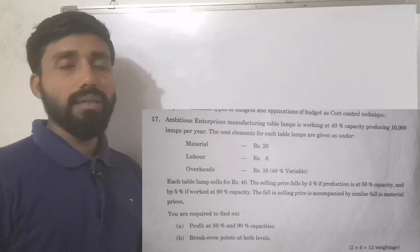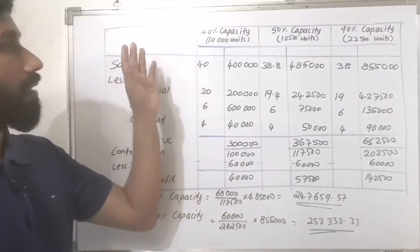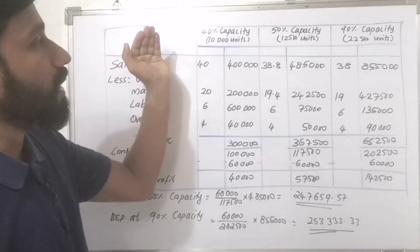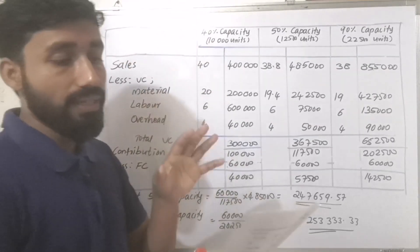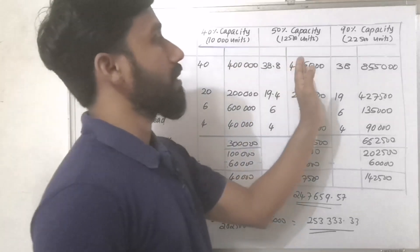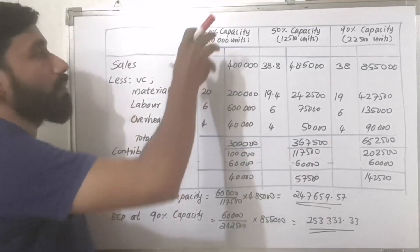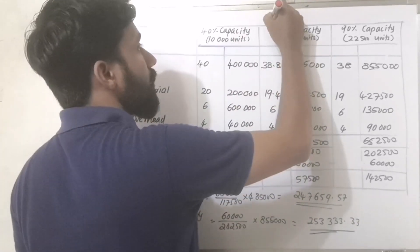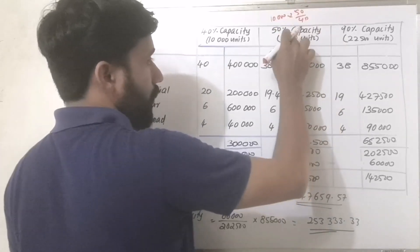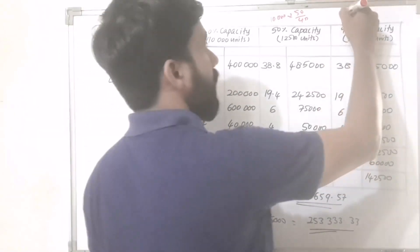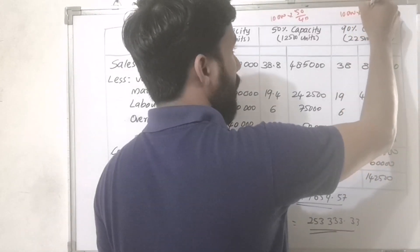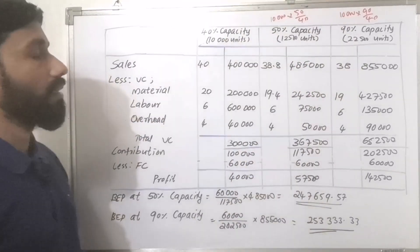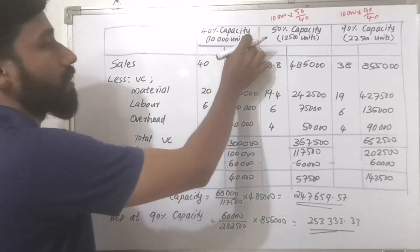This is the Marginal Cost Statement. We have three columns: 40% capacity at 10,000 units, 50% capacity at 12,500 units, and 90% capacity — 10,000 into 50 divided by 40 — giving 12,500 units. For 90% capacity, the units are 22,500.